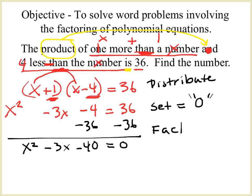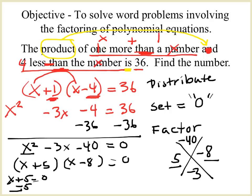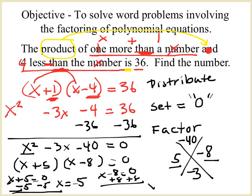Step four, I'm going to factor. Your X marks a spot: what multiplies to negative 40 and adds to negative 3? That would be 8 and 5 — we would have to have the 8 be negative. Remember, the square root of X squared is X, so the factors are plus 5 and minus 8. Now set each factor equal to zero. X plus 5 equals zero, subtract 5, X equals negative 5. X minus 8 equals zero, add 8, X equals 8.